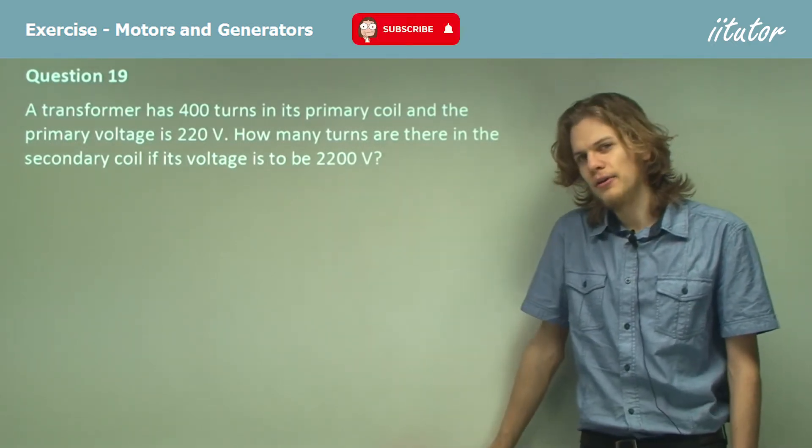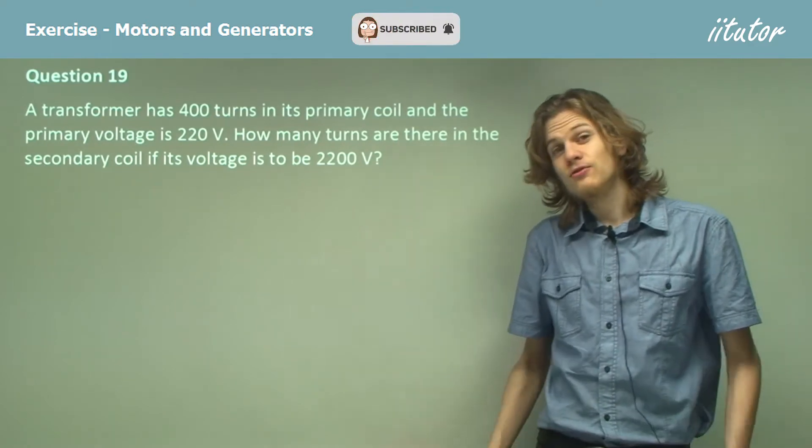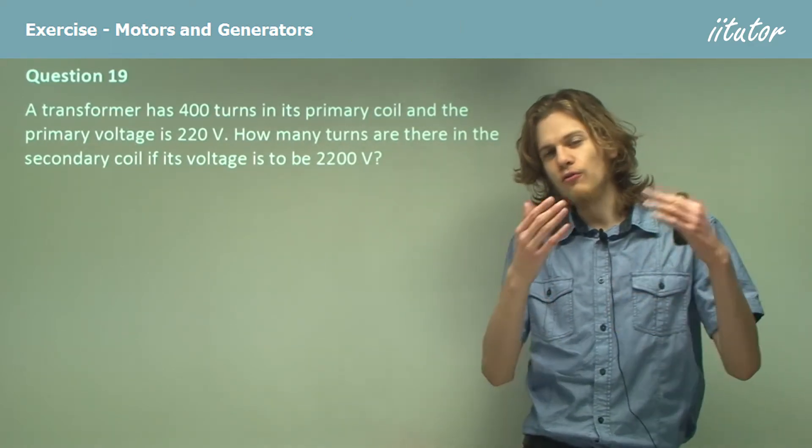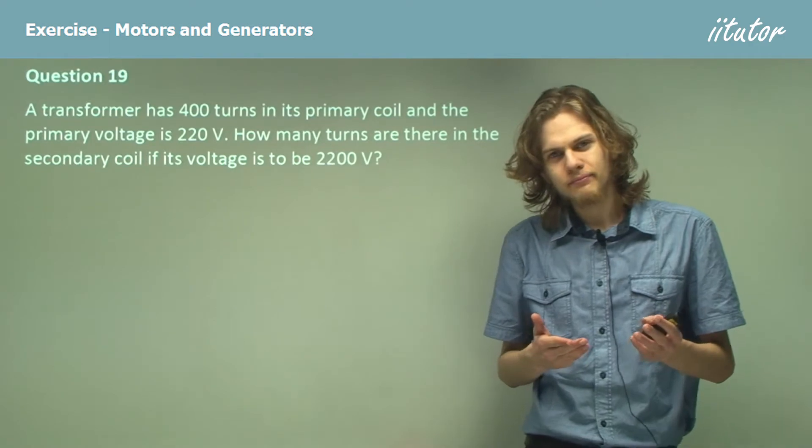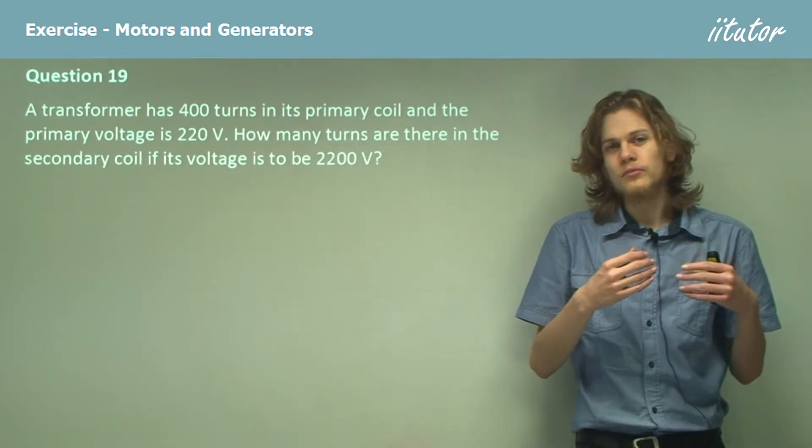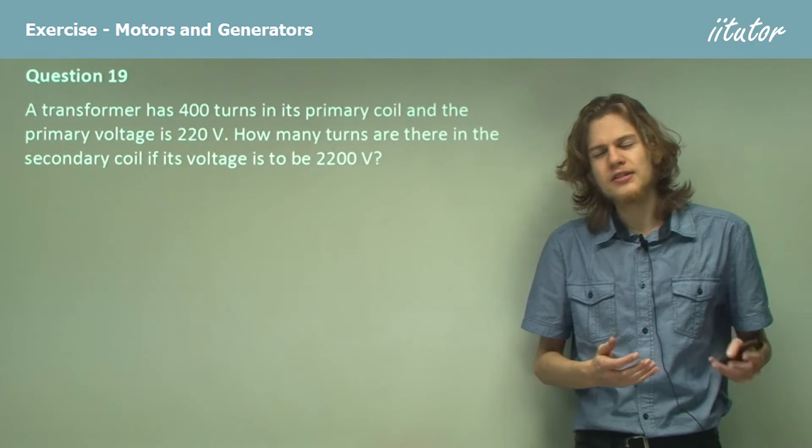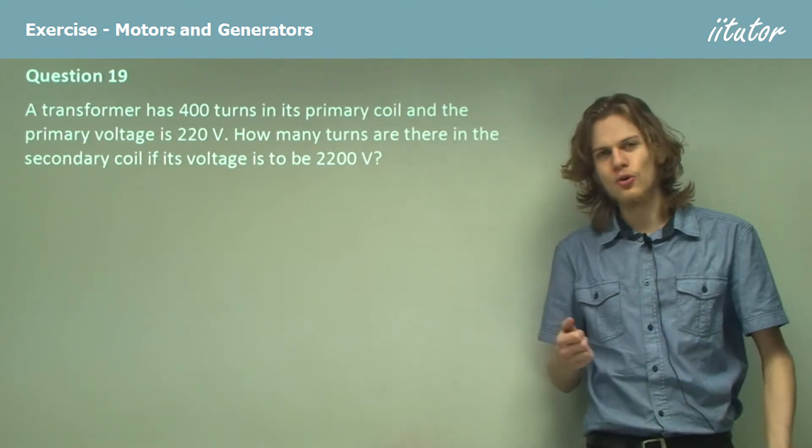What equation do we use here, I wonder? It is of course the equation that relates the voltages of a transformer. Specifically, the ratio of voltages is equal to the ratio of turns in each coil.